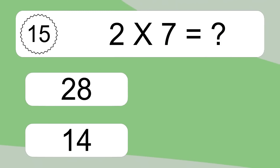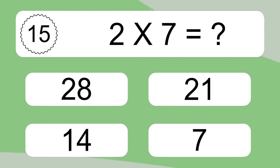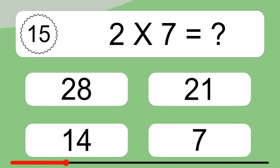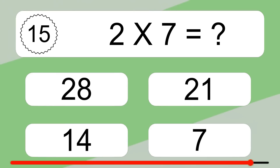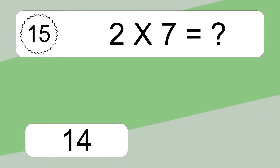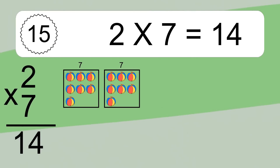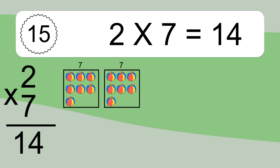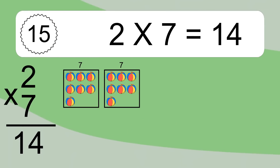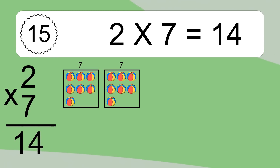2 times 7 equals what? 2 times 7 equals 14. We have 2 boxes and each box has 7 colorful balls inside. If you count all the balls in all the boxes together, you will have 2 times 7 balls. This equals 14 balls.